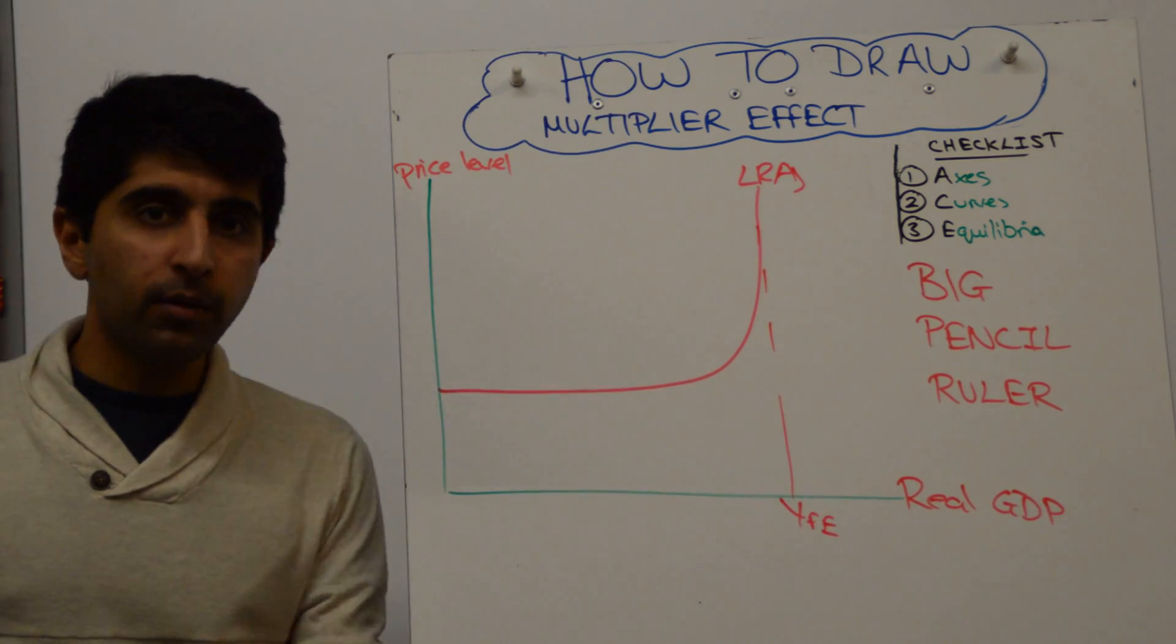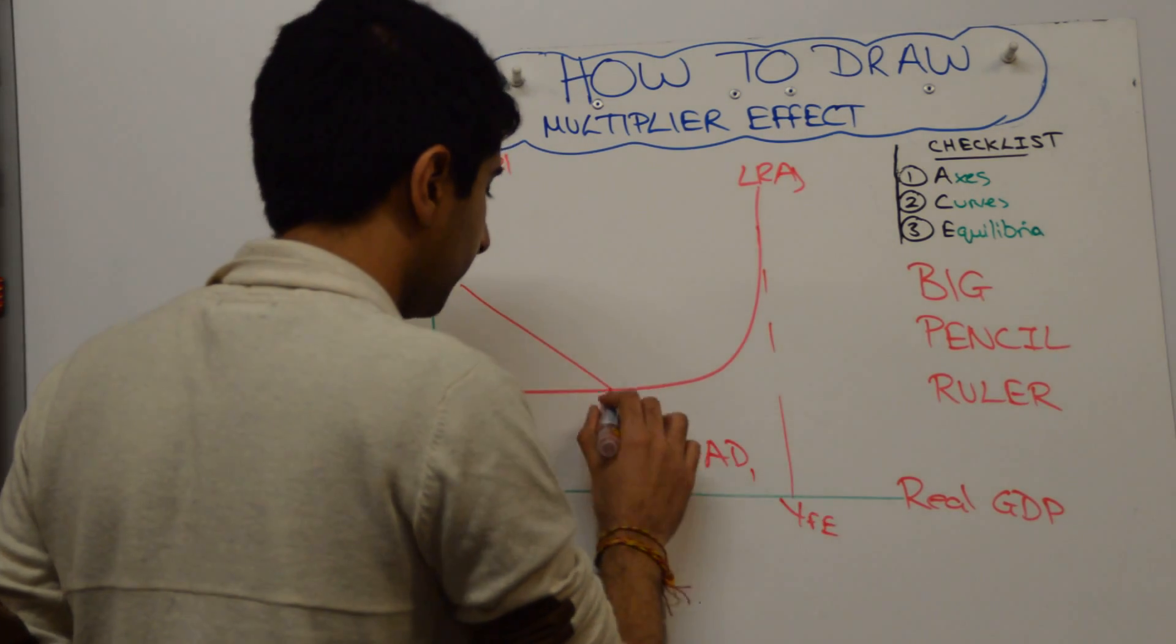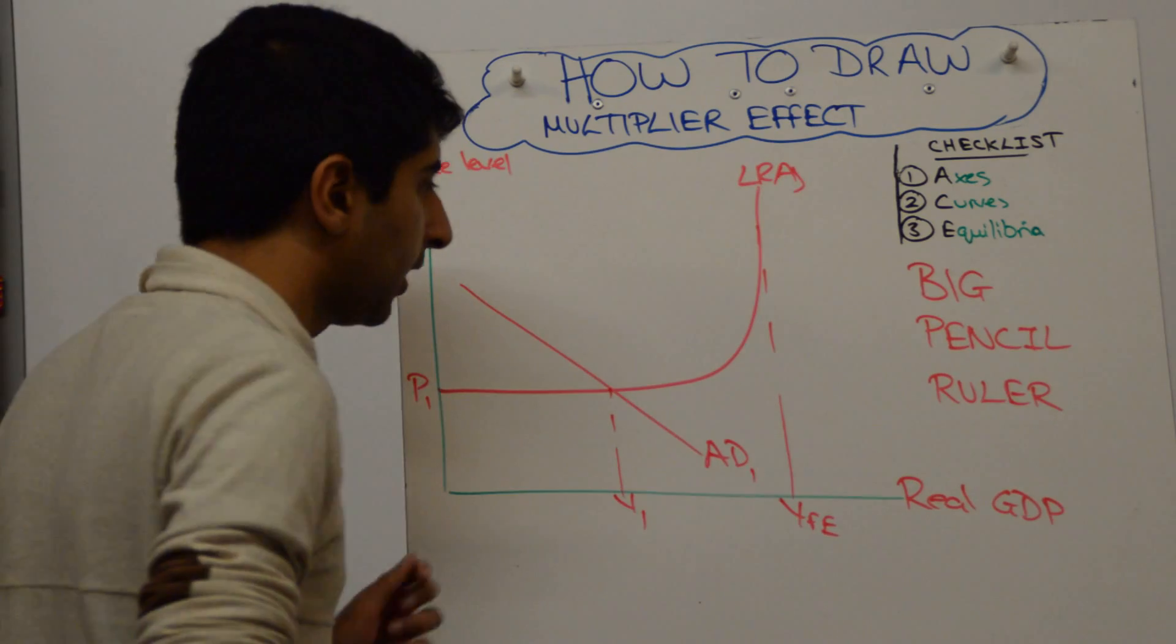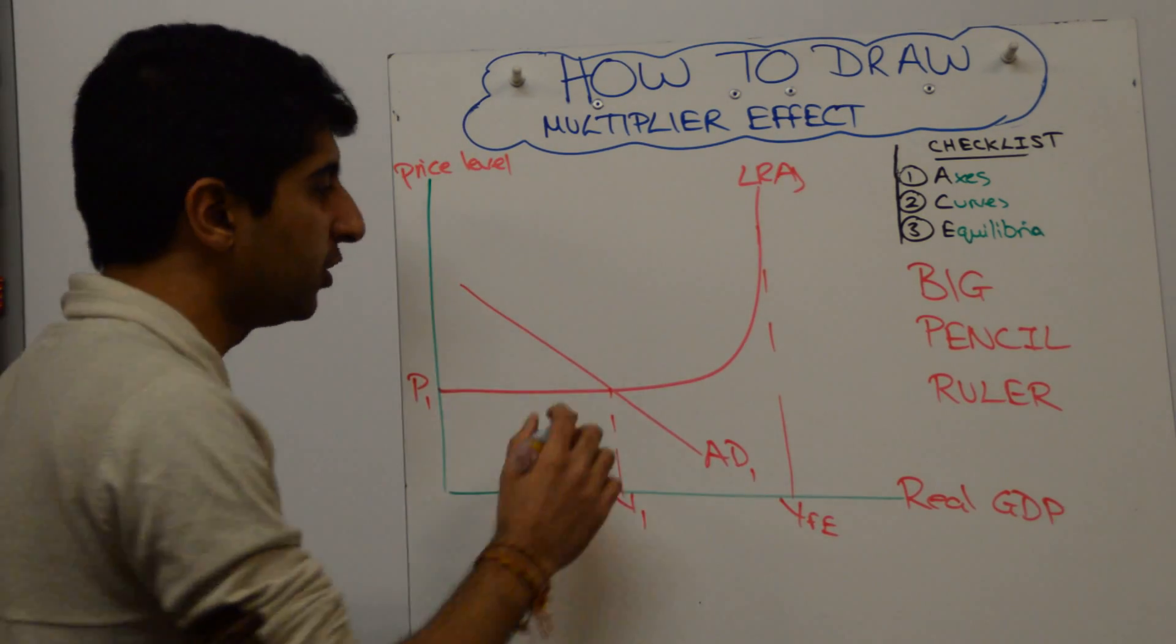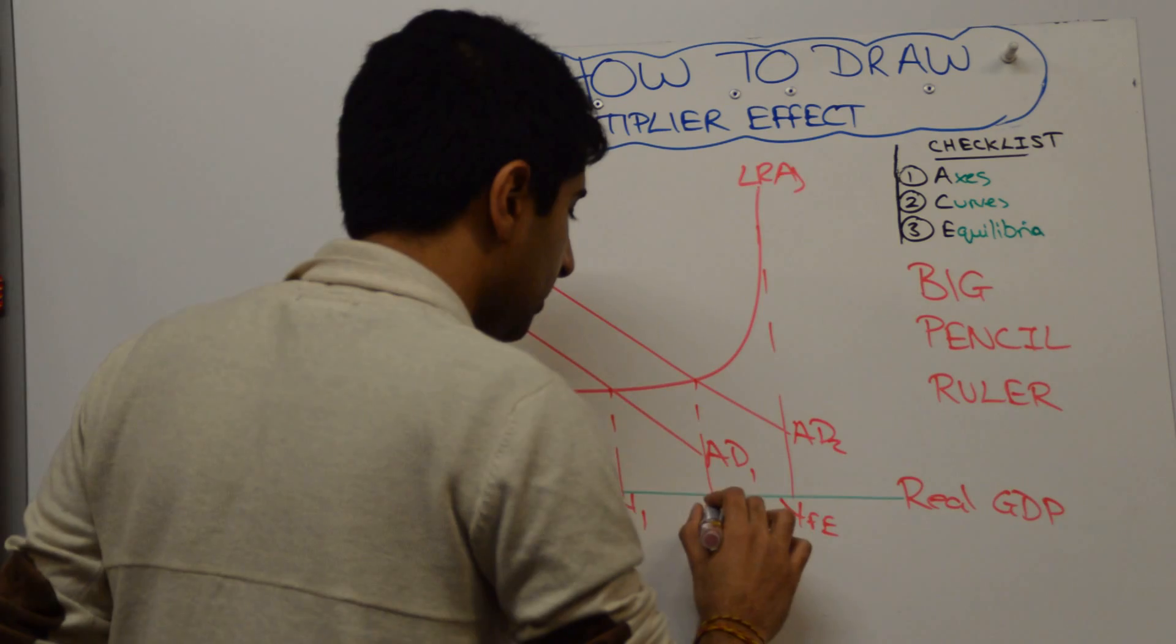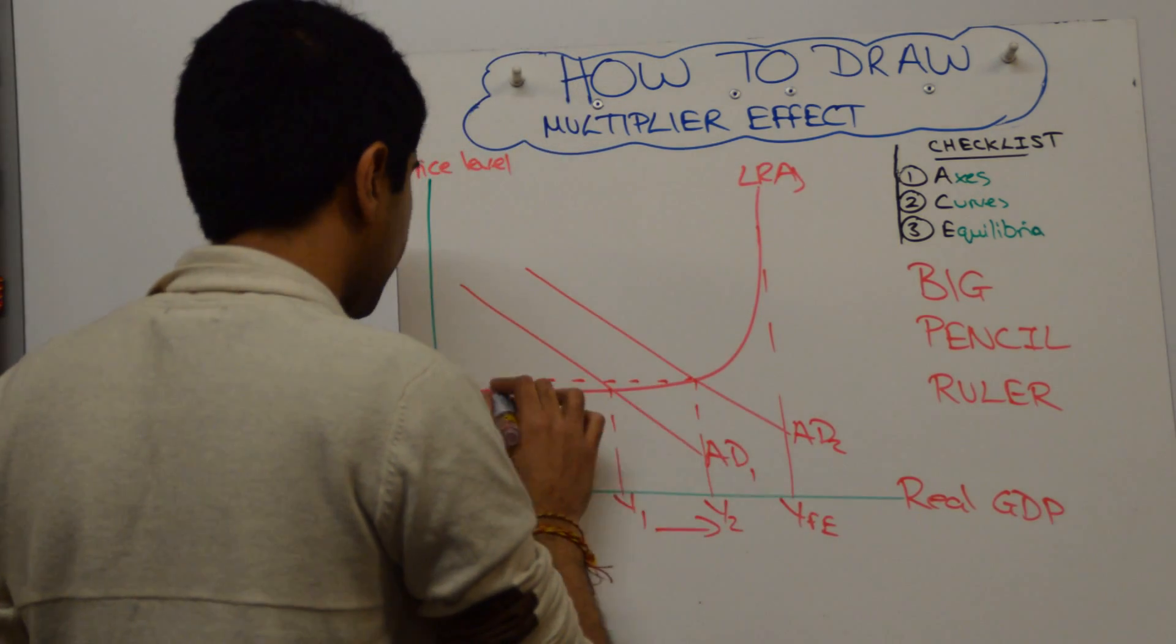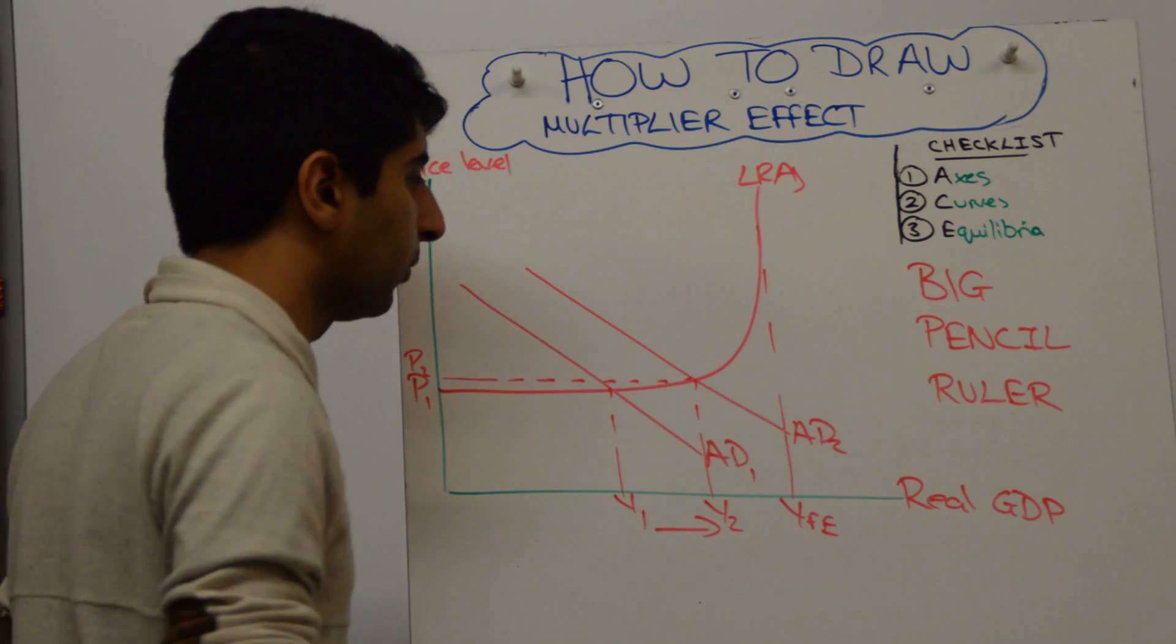What you want to show now is your aggregate demand initially, call it AD1, with equilibrium Y1 and P1. You want to show an initial shift of aggregate demand. So there is an initial increase in spending which takes the economy from Y1 to Y2 with a tiny increase in the price level from P1 to P2.